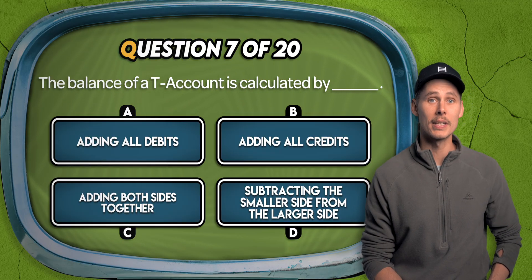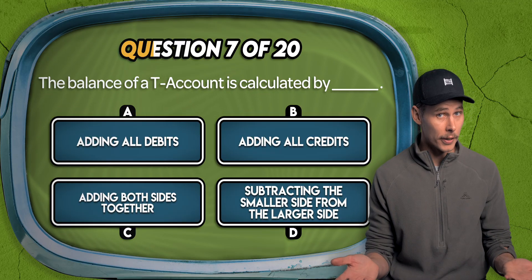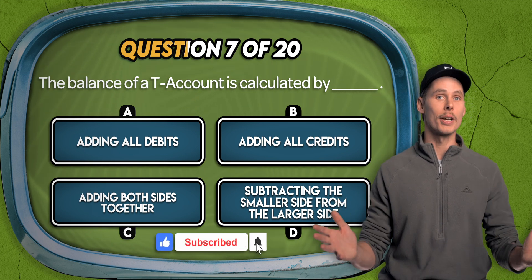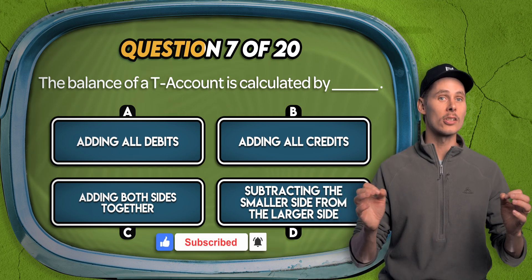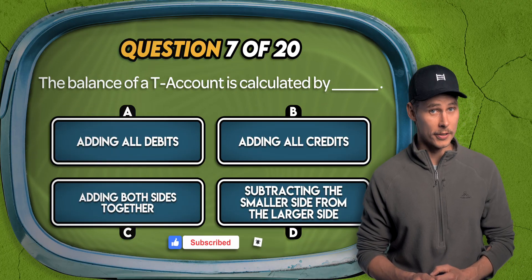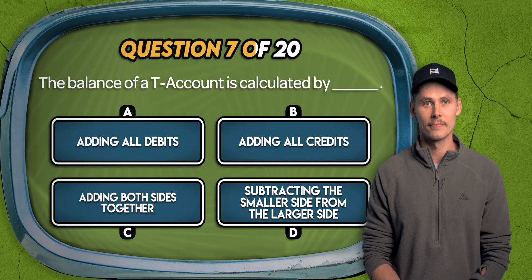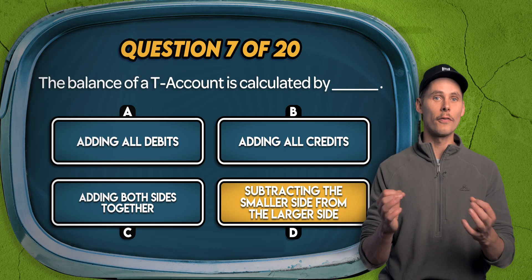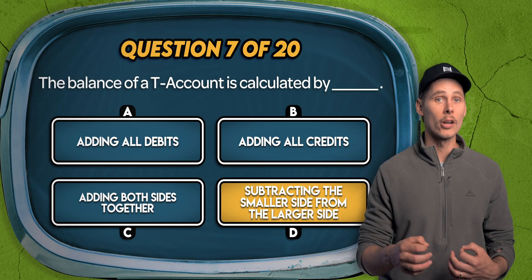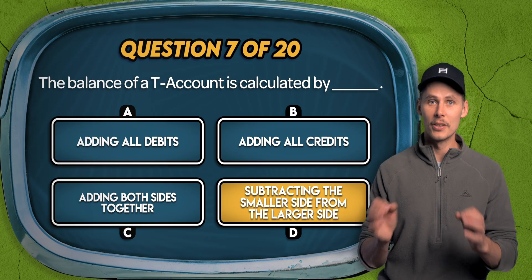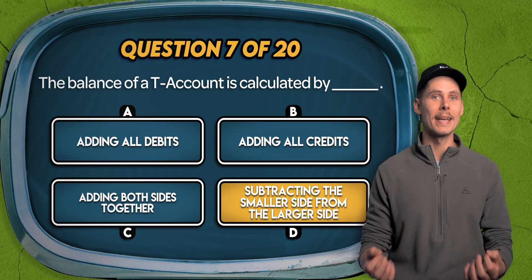Question 7. The balance of a T-account is calculated by: adding all debits, adding all credits, adding both sides together, or subtracting the smaller side from the larger side? D. To find the balance of a T-account, you add up each side and subtract the smaller total from the larger total. The difference represents the account's remaining balance.